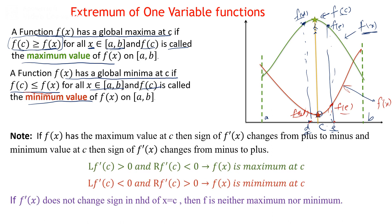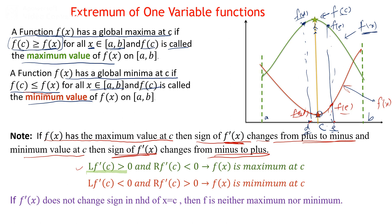If the function has an extremum value, the derivative of the function changes sign. If f(x) has a maximum value at c, the sign of f'(x) changes from plus to minus. If the value of the function is minimum at c, the sign of the first derivative changes from minus to plus. So if the left-hand derivative at c is greater than zero and the right-hand derivative at c is less than zero, then the function is maximum at c.